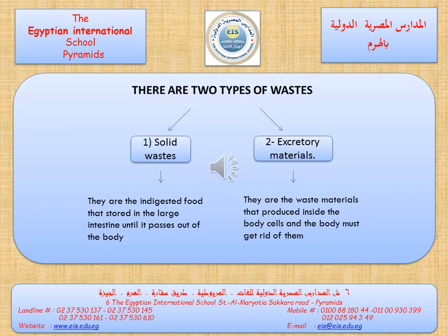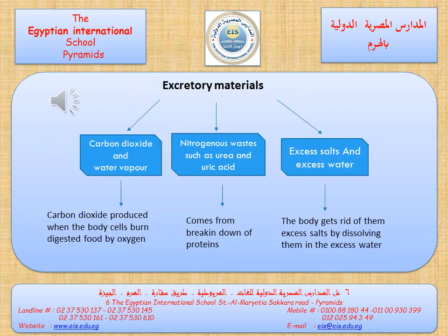We have two types of wastes. The first one is solid wastes, which are the undigested food that is stored in the large intestine until it passes out of the body through the anus. The second type of wastes is excretory materials, which are the waste materials produced inside the body cells during the burning of digested food with oxygen, and the body must get rid of them.